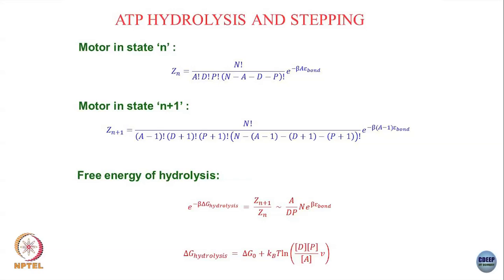So e to the power of minus beta times delta G hydrolysis equals Z_{n+1} divided by Z_n. This picks up a factor from A, from D, P, one beta times epsilon bond from the bond difference, and a factor I approximate as n. The assumption is that n is much much larger than A, D, or P, and each of those is much larger than 1 — so there are a macroscopic number of ATP and ADP molecules but an even larger number of solution boxes. In that limit, n minus A minus D minus P is approximated as n.